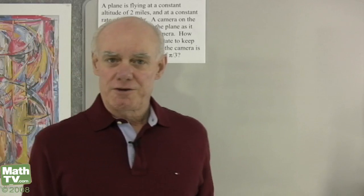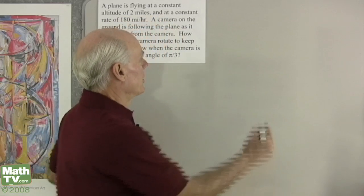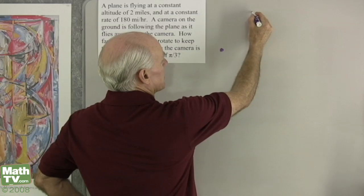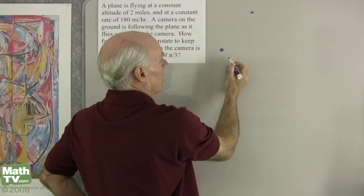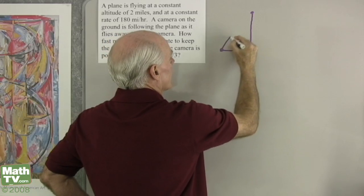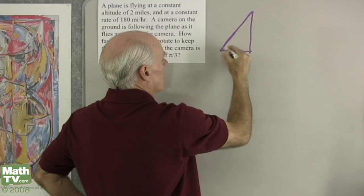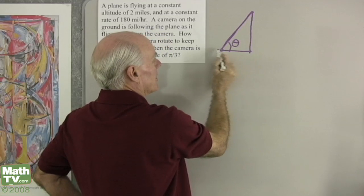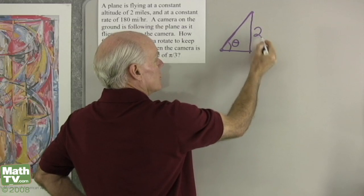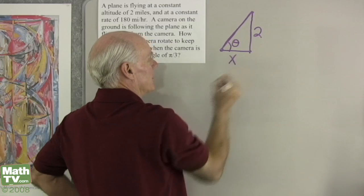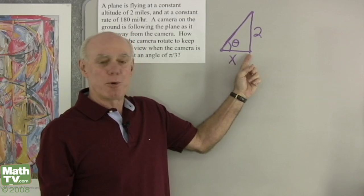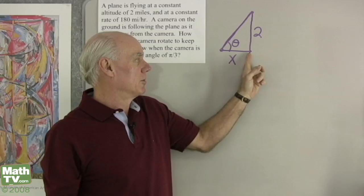Let's start with a little diagram of the situation. I'm going to put the camera on the ground over here, and then the plane is up in the air, flying away from the camera. Let's draw a little right triangle here. I'll call that angle theta. This is the ground, so the plane is 2 miles in the air, and x is the distance between the camera on the ground and the point directly below the airplane.